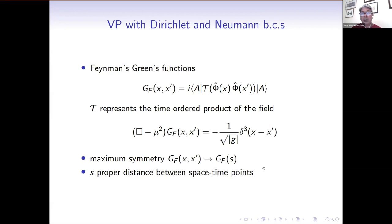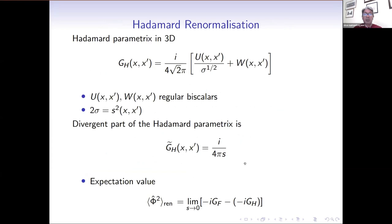Before looking at Robin boundary conditions, we've determined the vacuum polarization with Dirichlet and Neumann boundary conditions. Paramount in this is the determination of the Feynman Green's function, defined as the expectation value of the time-ordered product of the fields. The Feynman Green's function satisfies an inhomogeneous PDE, where g is the determinant of the metric and delta is a three-dimensional Dirac delta function. The Green's functions with Dirichlet and Neumann boundary conditions respect the maximum symmetry of the background spacetime, so we can express our Green's function as a function of the geodesic distance s between the two spacetime points. As we bring the spacetime points together the Green's function is divergent, so we employ Hadamard renormalization.